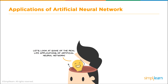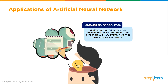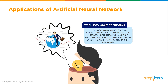We're in an exciting time with neural networks, machine learning, and artificial intelligence development. Let's look at some current real-life applications. Handwriting recognition: a neural network converts handwritten characters into digital characters the system can recognize. Stock exchange prediction: there are many factors that affect the stock market, and a neural network can examine a lot of those factors and predict prices on a daily basis, helping stockbrokers — especially given that we generate over three terabytes of data a day just from the US stock exchange.